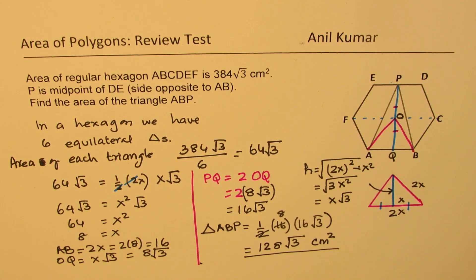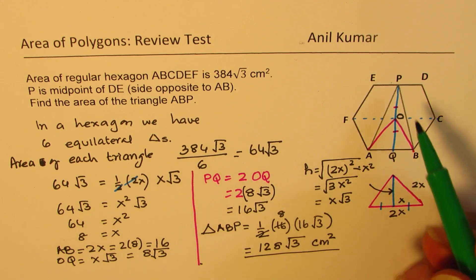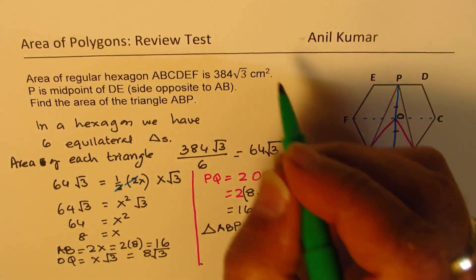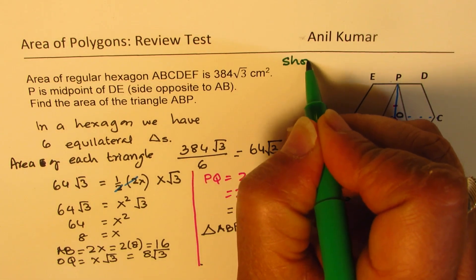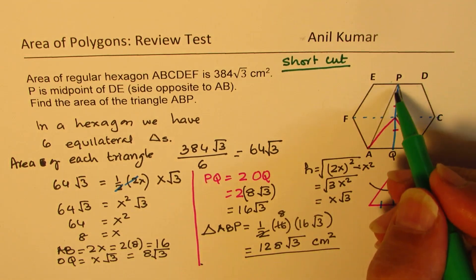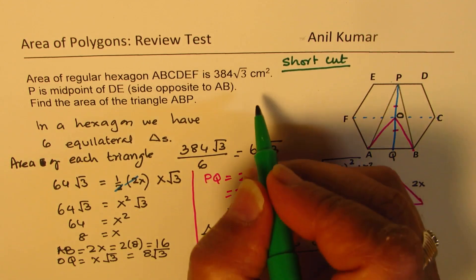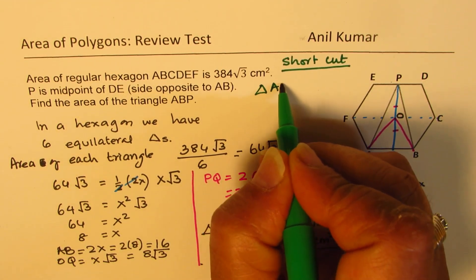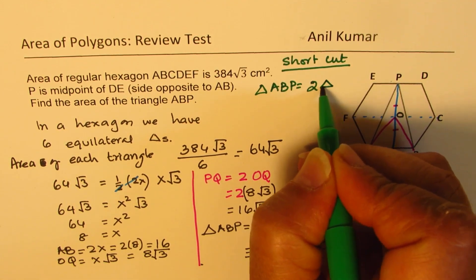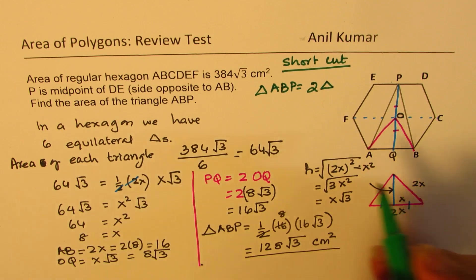Is that clear? That is how we will find the area of this particular triangle. Now, here is a shortcut to this, because this at times could be asked in a multiple choice test paper. The shortcut is: area of this triangle, basically area of triangle ABP is 2 times area of triangle AOP.